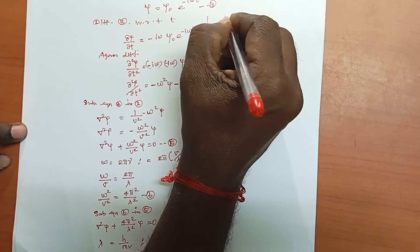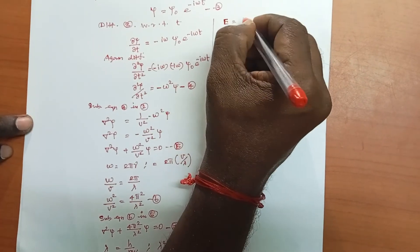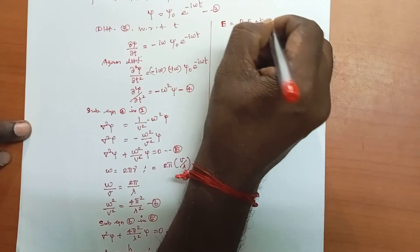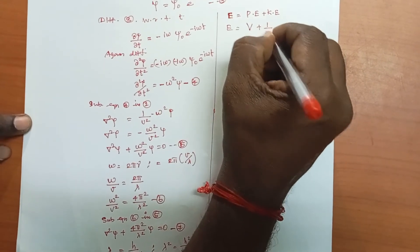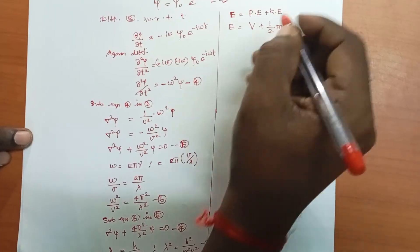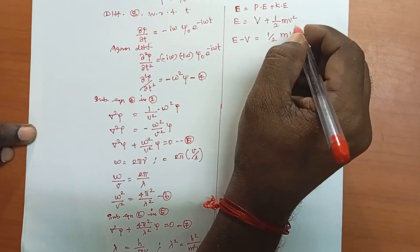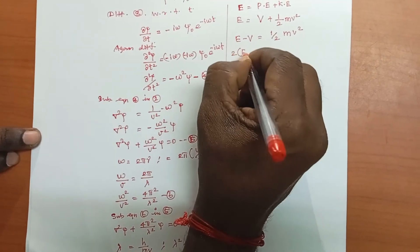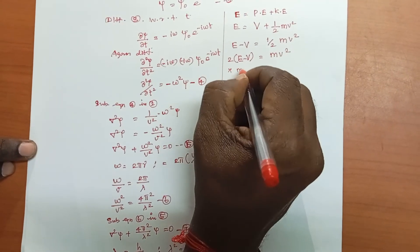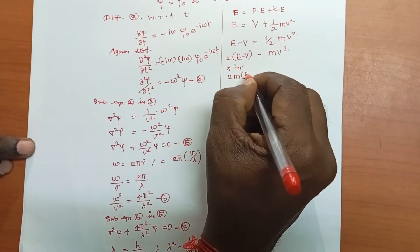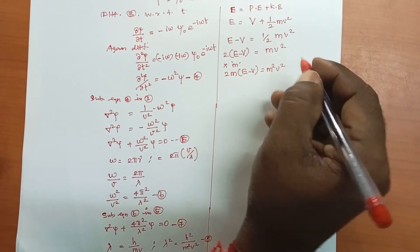Now we find the total energy of the particle. Total energy E equals potential energy V plus kinetic energy (1/2)mv². Therefore E − V = (1/2)mv², which gives 2m(E − V) = m²v². This is equation number 10.